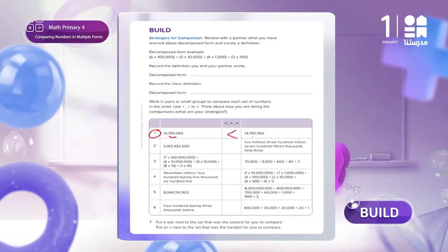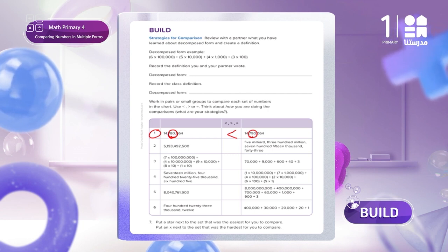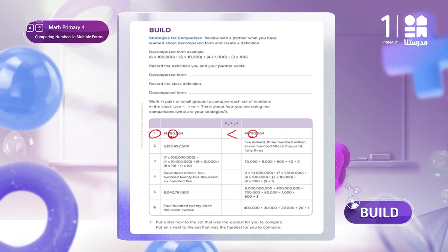Why? Because in the thousands, here we have 780 thousands and here 790 thousands. Of course, 790 thousands is greater than 780 thousands. Let's move to question 2.